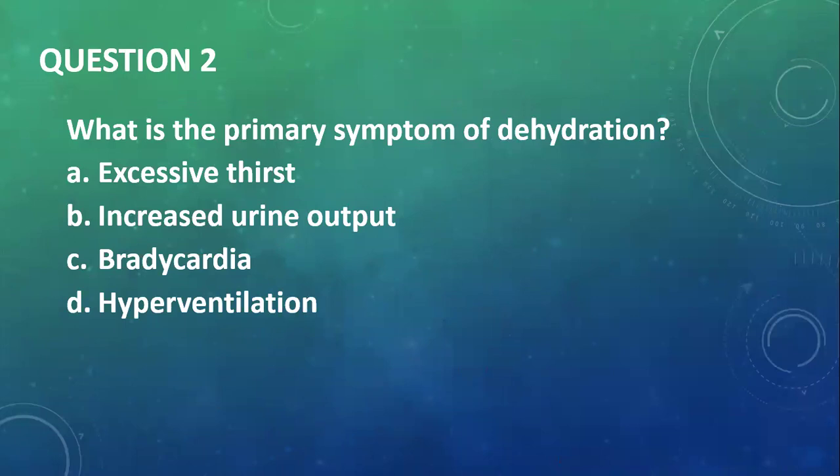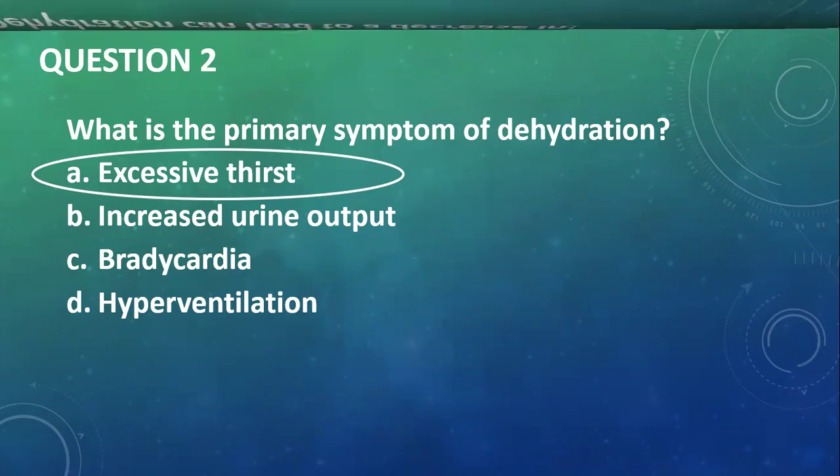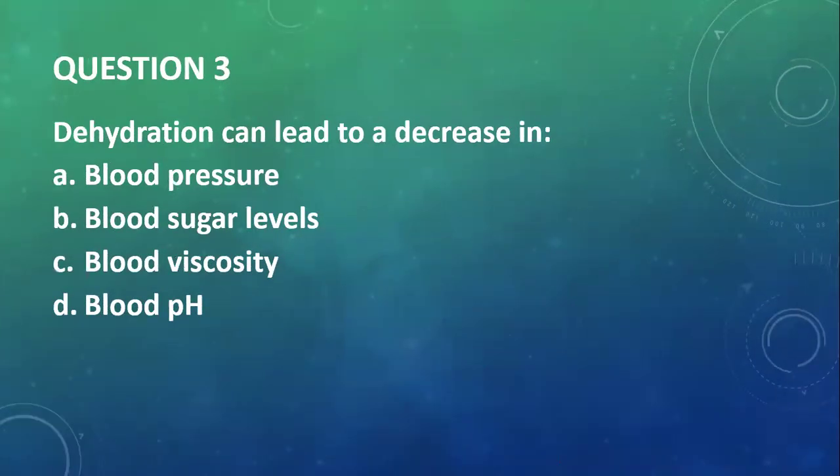Question 2: What is the primary symptom of dehydration? You have excessive thirst, increased urination, bradycardia, and hyperventilation. We go with excessive thirst—that's the first thing you begin to have when you start being dehydrated.